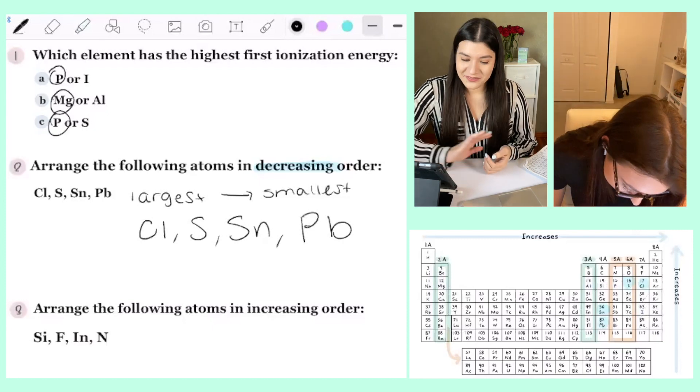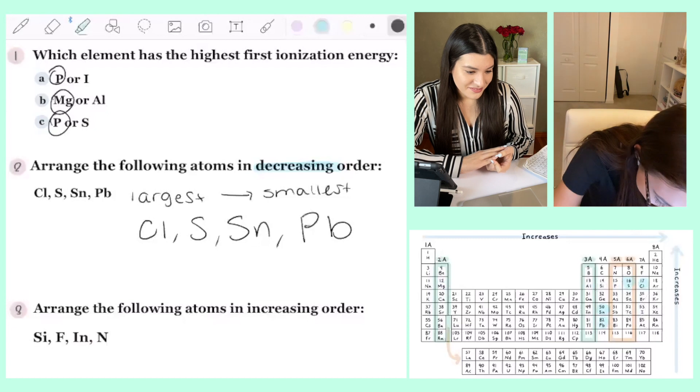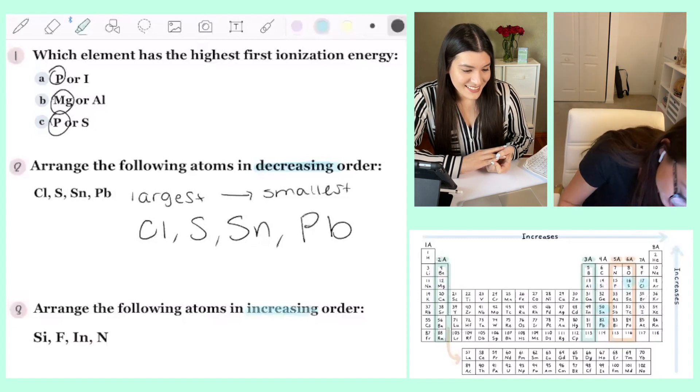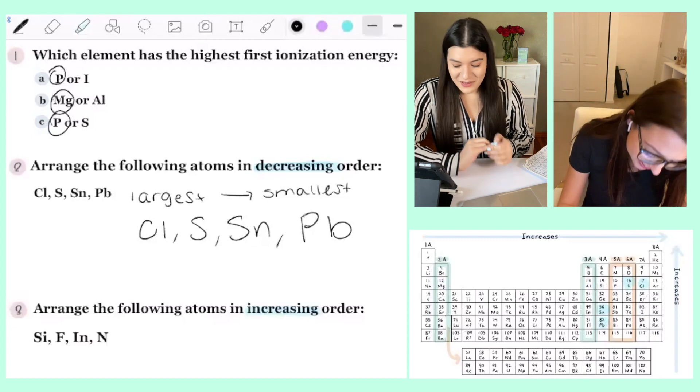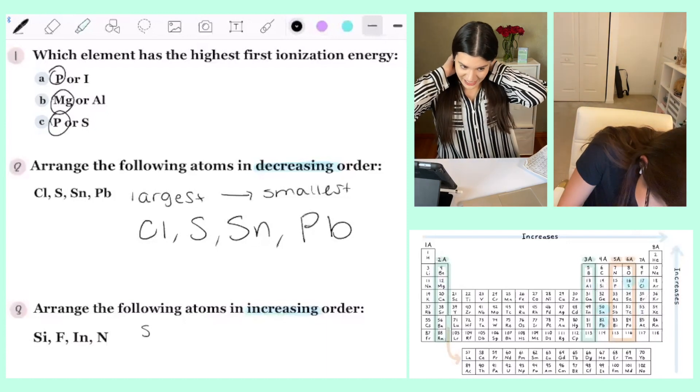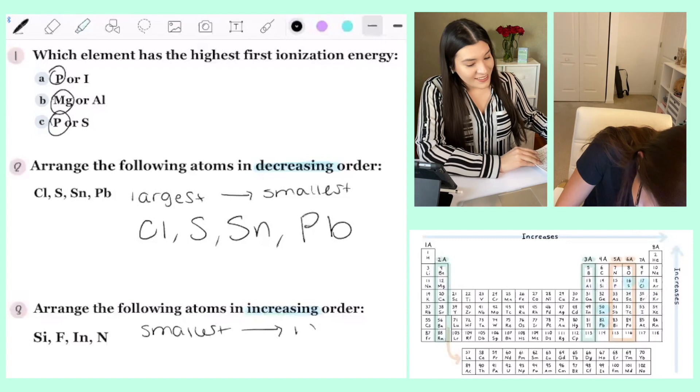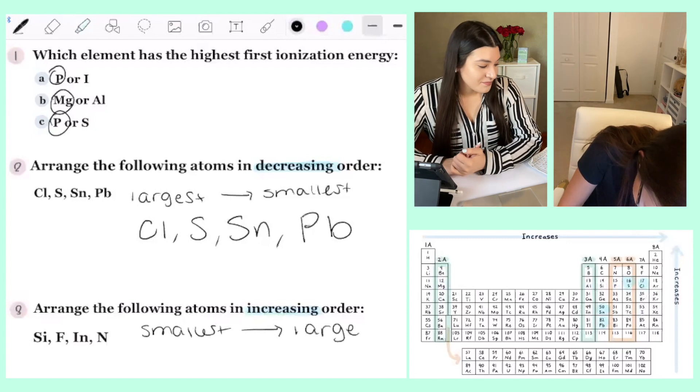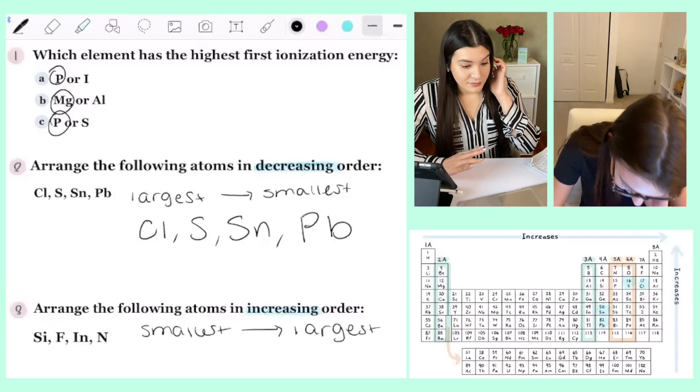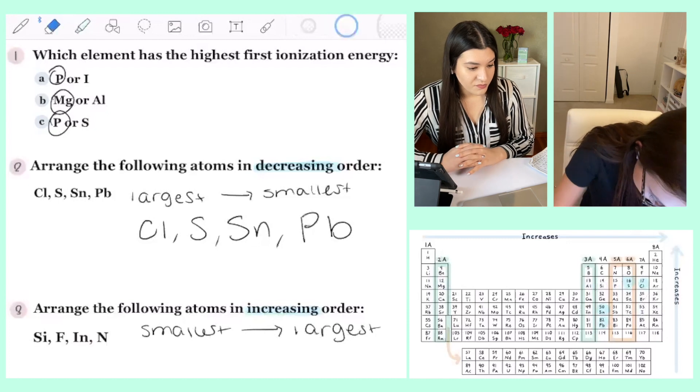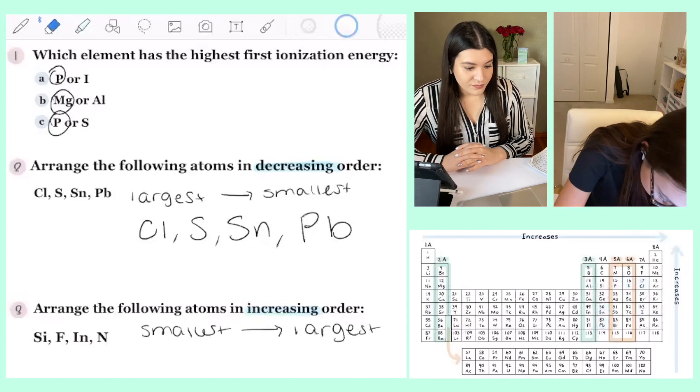Arrange the following atoms in increasing order. Yay. I am so much more a fan of increasing order. Same. Same. Yeah. Decreasing is like, great, I have to reverse my thinking. There's already enough exceptions. Yeah, exactly. Okay. Now let me erase stuff here.